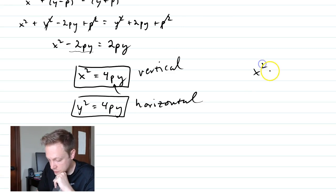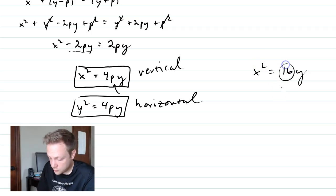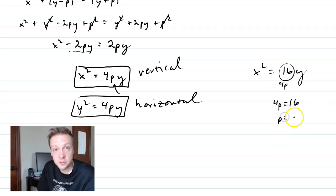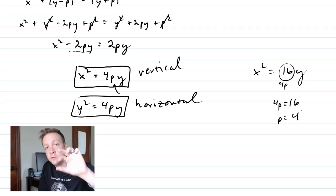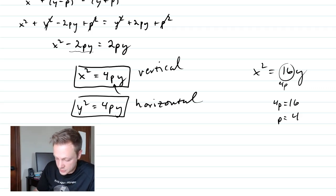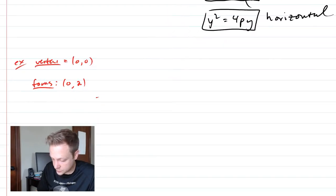For example, given x² = 16y: this is a vertical parabola, and the coefficient in front of y equals 4p. So 4p = 16, which means p = 4. That tells us the focus is 4 units above the vertex and the directrix is 4 units below the vertex.